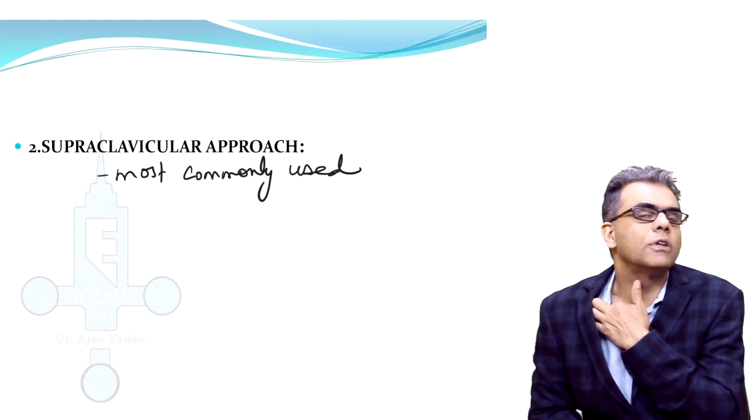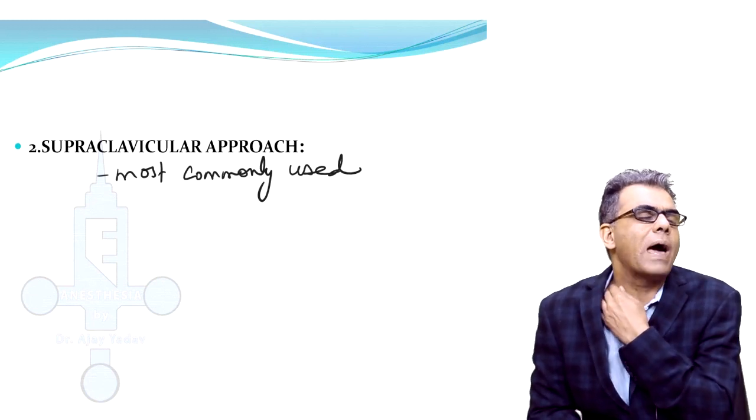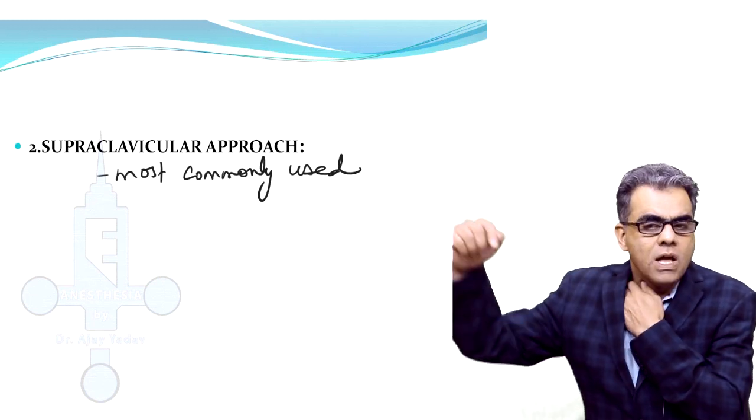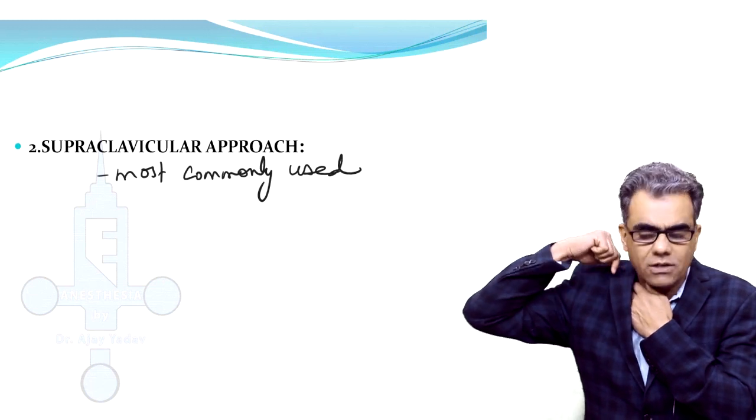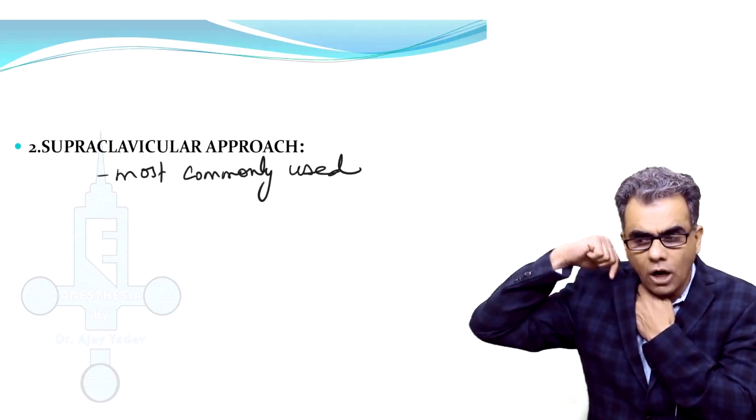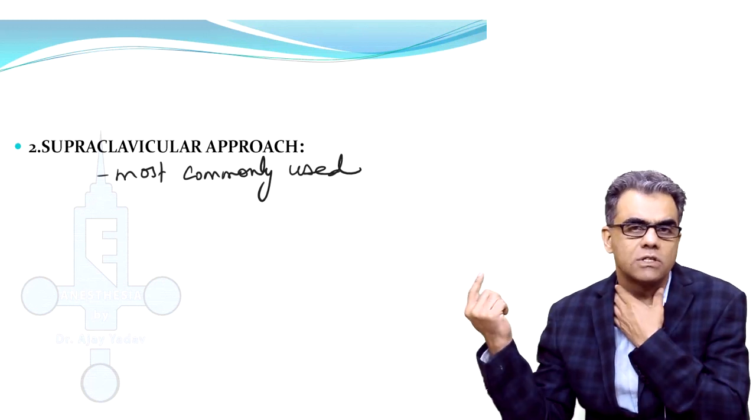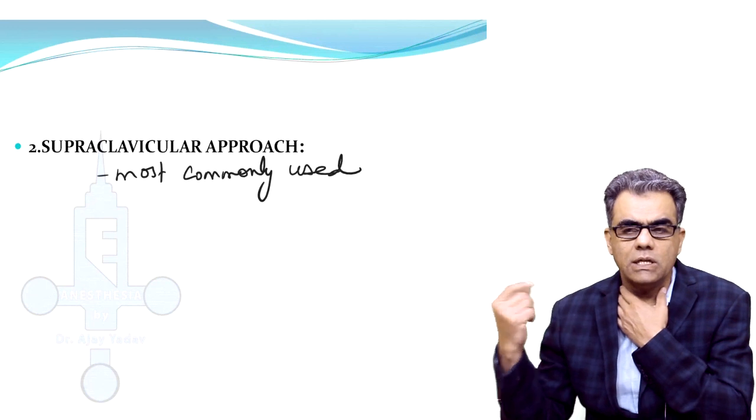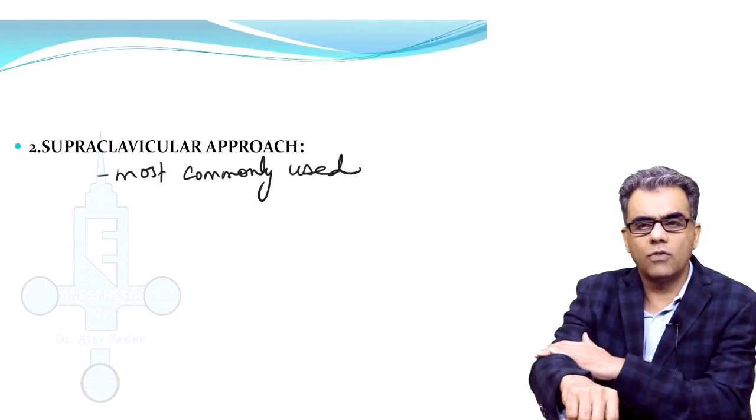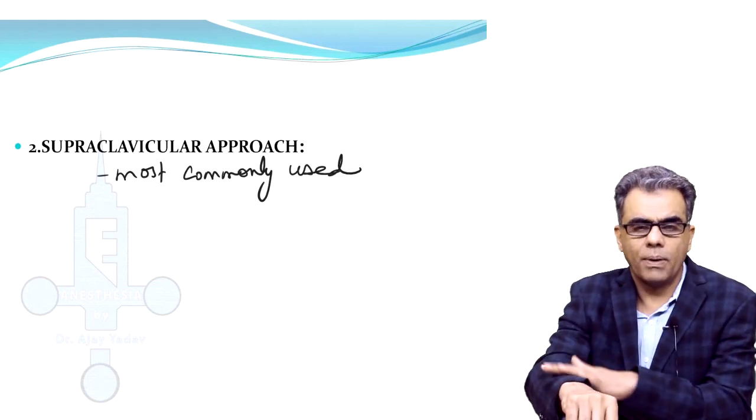Just above the midpoint of clavicle you try to palpate the subclavian artery. Then you enter your needle lateral to the artery and keep going downwards and laterally till you elicit the paresthesia, or if using a nerve stimulator you can see muscle twitching in any muscle of the upper limb.